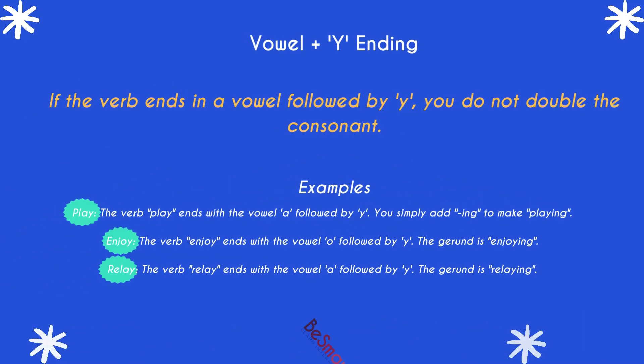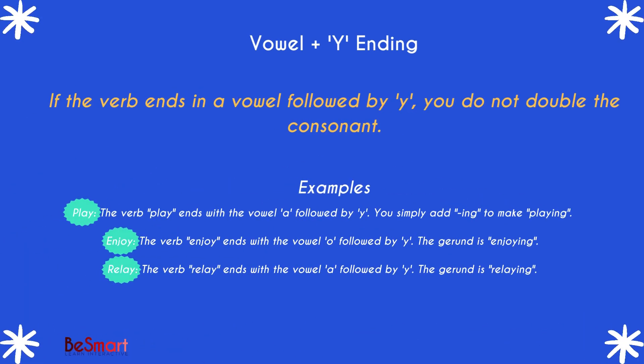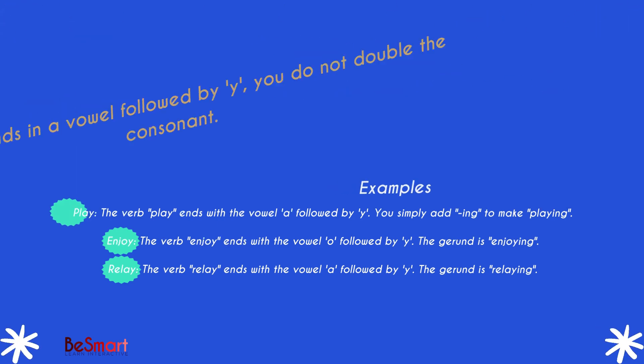The fifth rule applies to verbs ending in a vowel followed by y. In this case, you do not double the consonant. Examples include play becoming playing, enjoy becoming enjoying, and relay becoming relaying. The final y remains unchanged, and we simply add -ing.